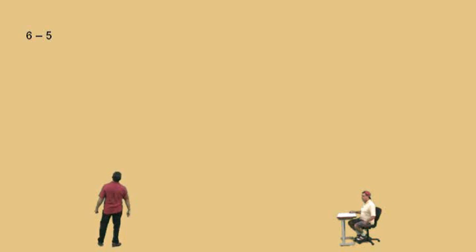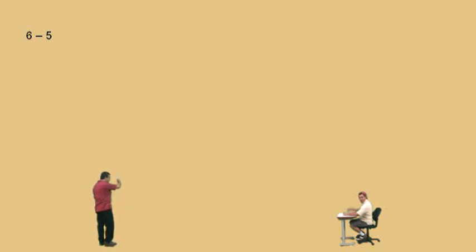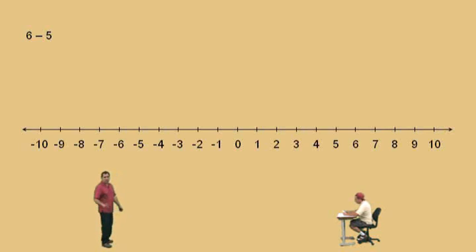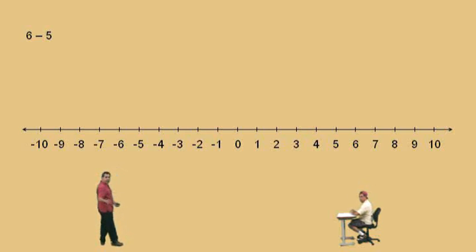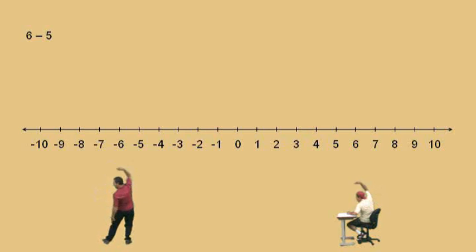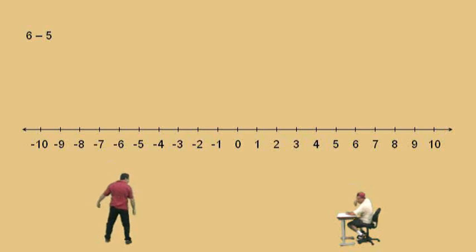We've got to do our first problems right here. Okay, let's bring out a number line. Now, we're doing subtraction. Remember, when we did addition, you move which way, Charlie? To the right. Now, we're doing subtraction, so we move which way, Charlie? To the left. That's right — to the left.